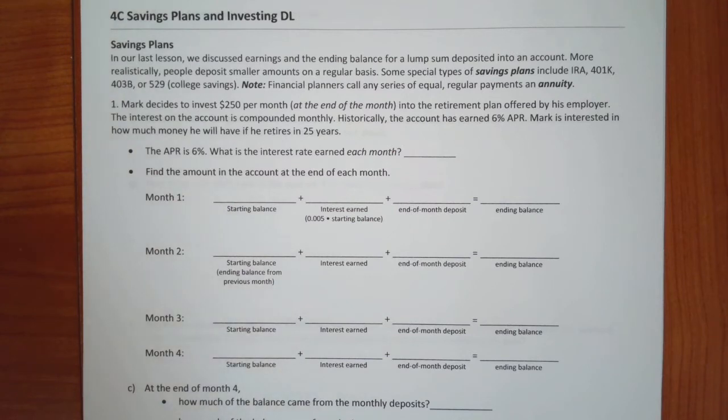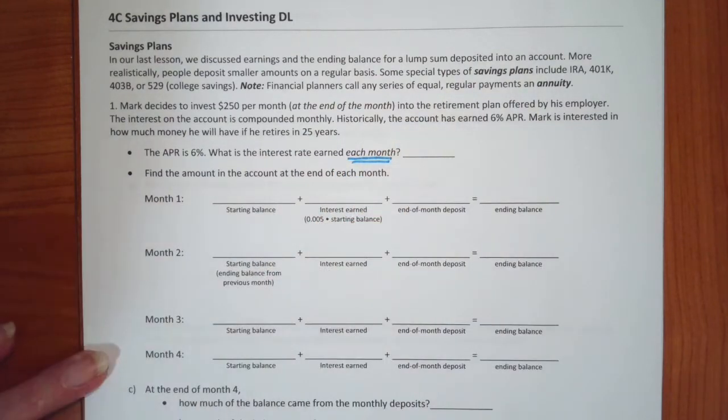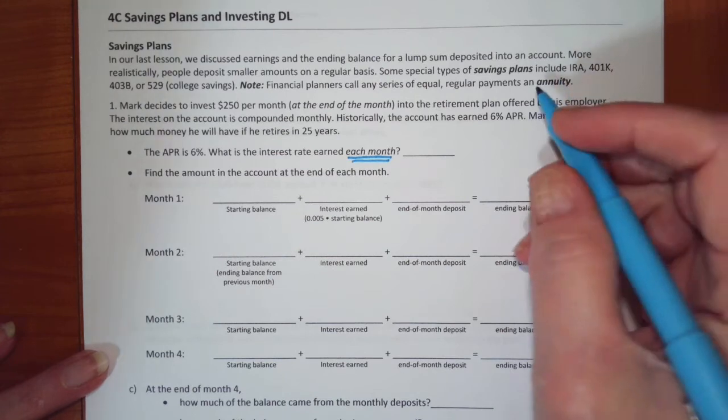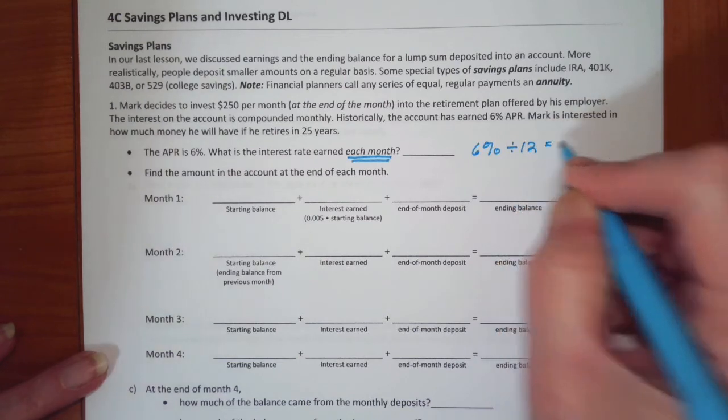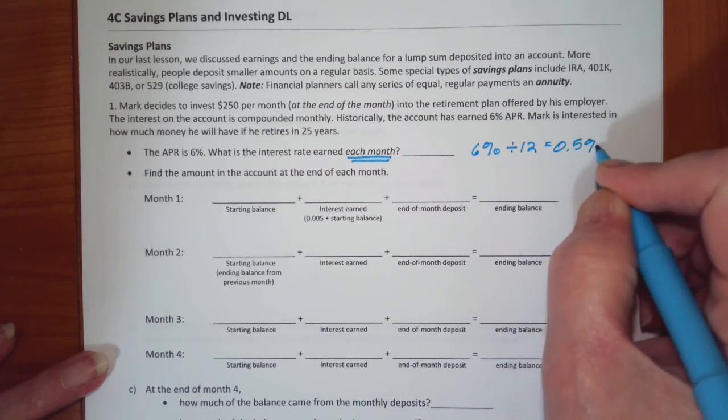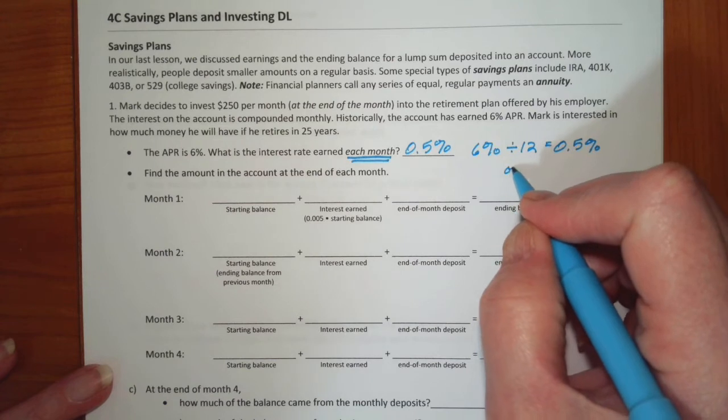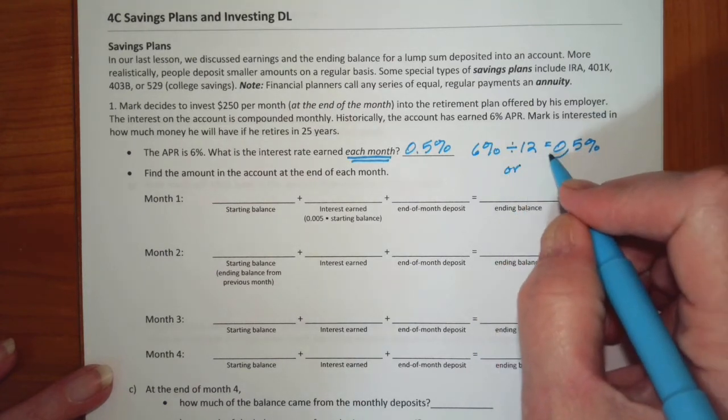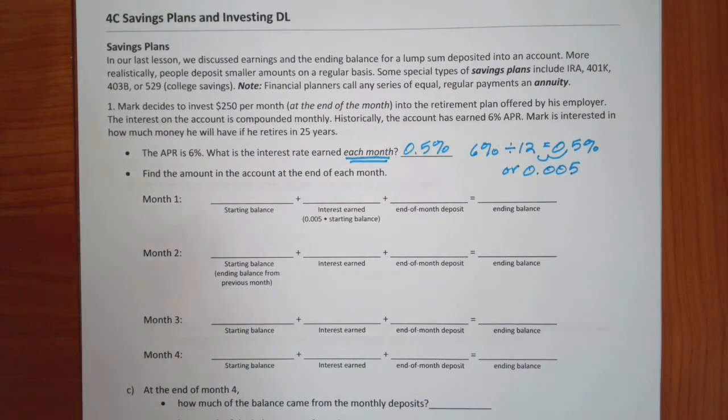So, if this is biweekly, it would be compounded biweekly. If it was semi-annually, it would be compounded semi-annually. Historically, the account has earned 6% APR, and Mark is interested in how much money he will have if he retires in 25 years. Okay, well, since we're going to be looking at this by the month, we can't really look at the APR in general if we're going to calculate this by hand. We need to look at what is the interest rate each month. Well, how would I do that? I would just take 6% divided by 12, which gives me 0.5%. So, it would be 0.5% each month.